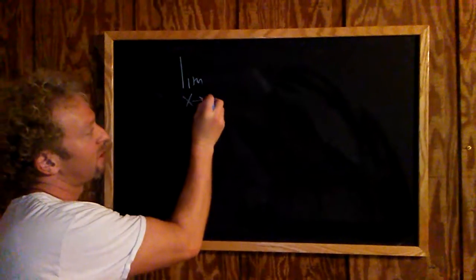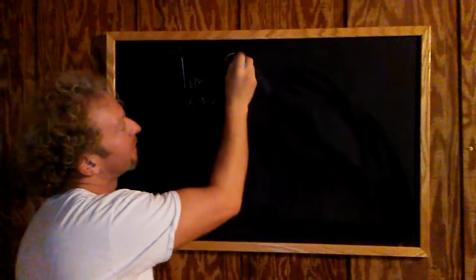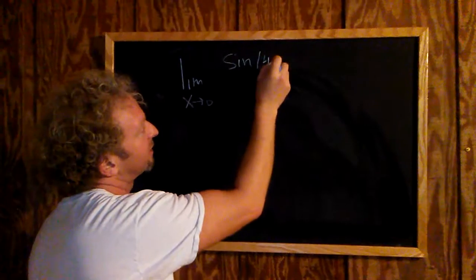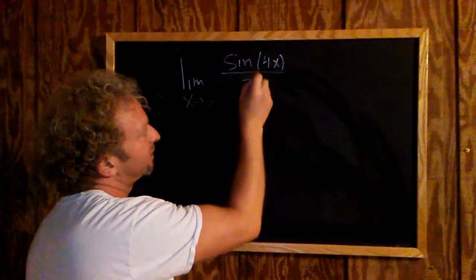involving sine x over x. So we're going to find the limit as x approaches 0 of sine of 4x over 7x.